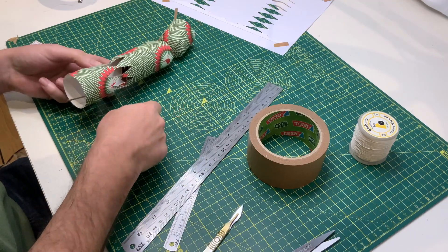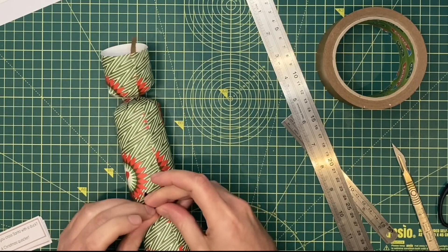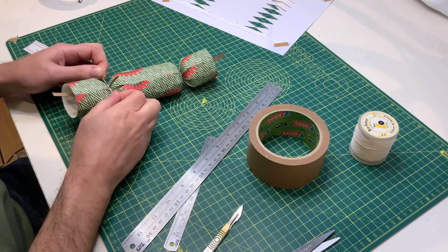Now create a second knot on the opposite side of the cracker. Tighten it and trim as you did previously.